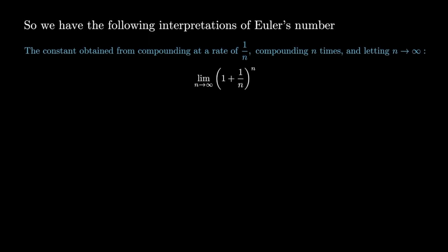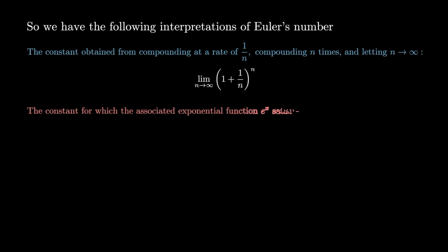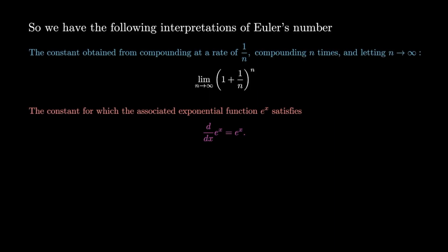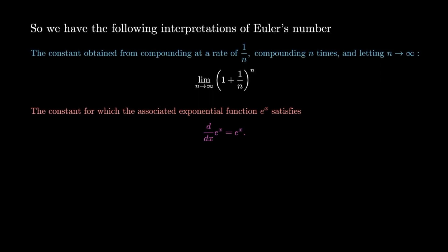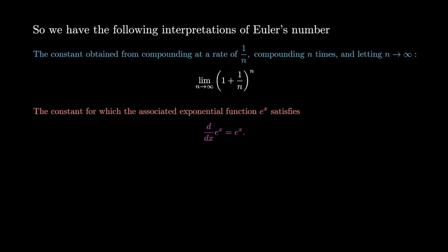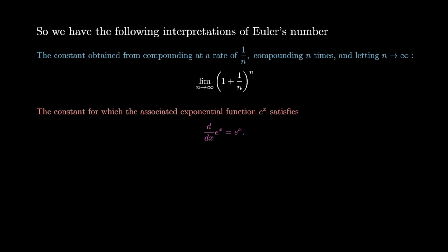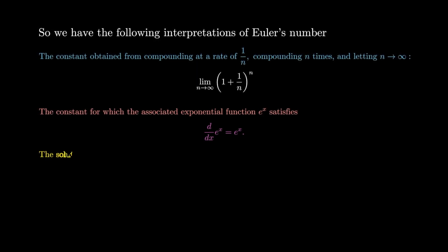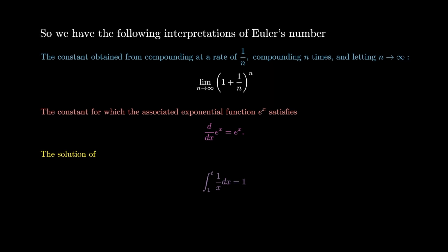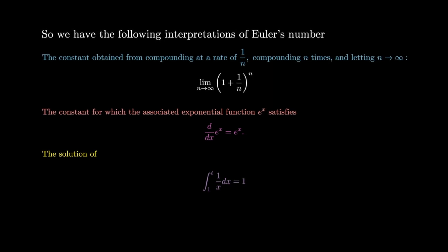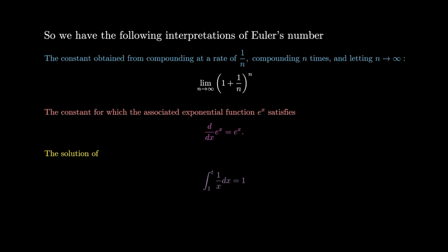If we wanted to do this via calculus, we could express it as the constant for which the associated exponential function satisfies d/dx of e to the x is exactly itself again. If we wanted to express this derivative condition in terms of integrals, then it's the solution t of the equation: the integral from 1 to t of 1 over x dx is equal to 1.